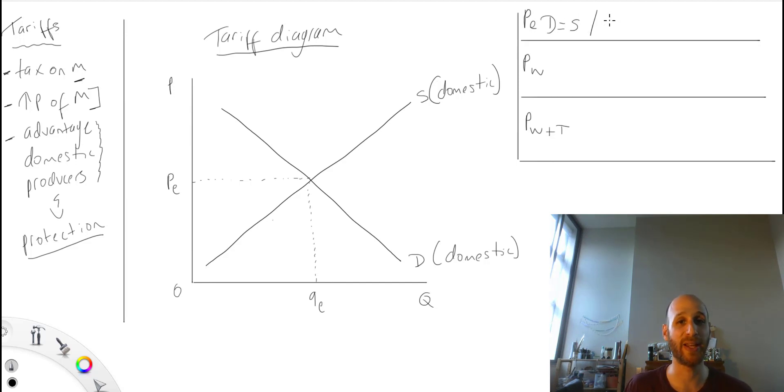Now because demand is domestic demand and supply is domestic supply, what I've got here is there are no imports. Everything here is satisfied within Australia.